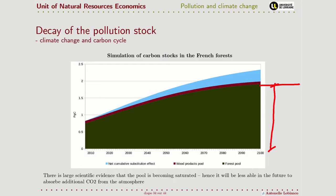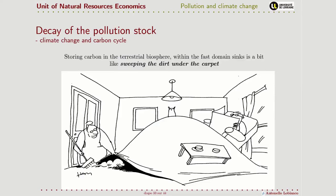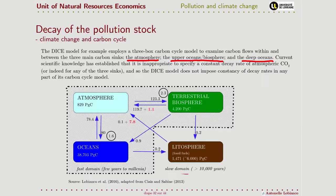Hence, this capacity of the terrestrial biosphere to absorb part of what we emit to the atmosphere — currently 2.3 petagrams — is destined to decrease with time. The same applies to the oceans, where it also creates other problems like the acidification of oceans. Because of the carbon becoming more and more saturated in CO2, oceans are becoming more and more acidic, and this leads to further problems.